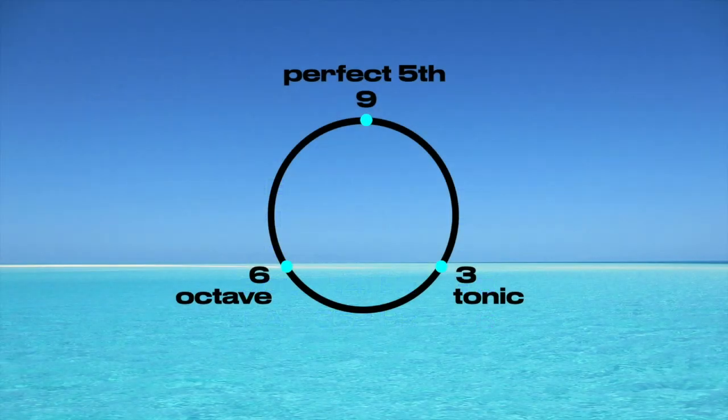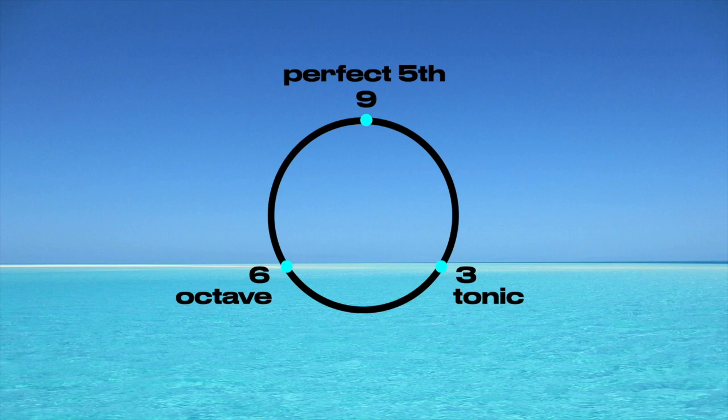In terms of musical intervals, 936 suggests the order of perfect fifth, tonic, and octave, rather than the chronological tonic, octave, and fifth.